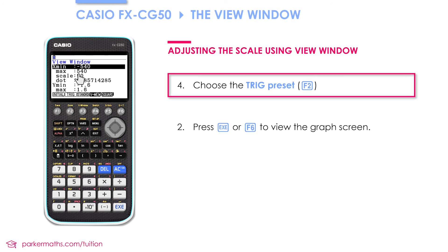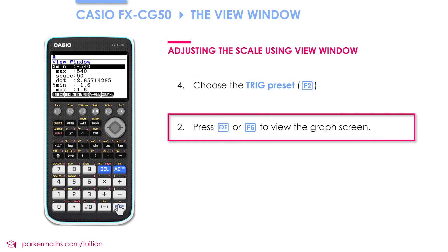That sets it to -540 to 540, and the y-axis is -1.6 to 1.6. If we press exe we can now see the graph, and we can see it looks much more like a typical sine curve.